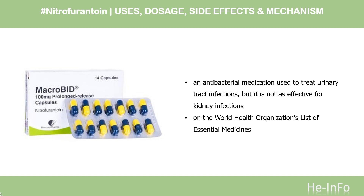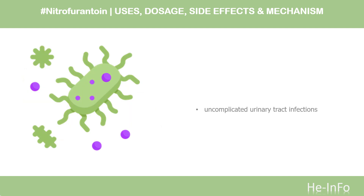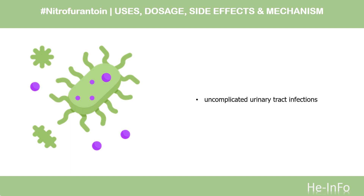It is available as a generic medication. In 2020, it was the 167th most commonly prescribed medication in the United States, with more than 3 million prescriptions. Nitrofurantoin is indicated to treat acute uncomplicated urinary tract infections.